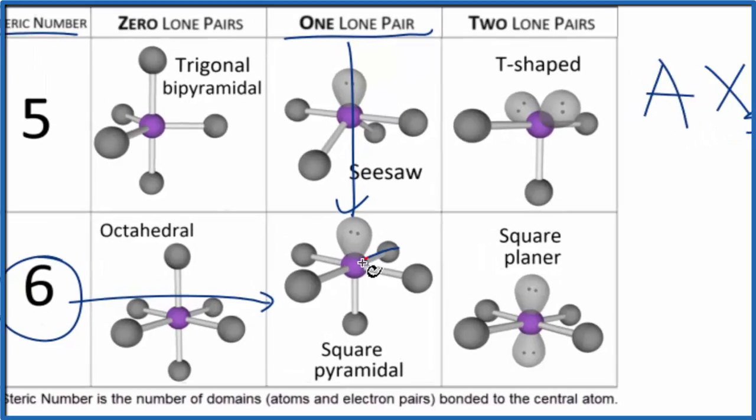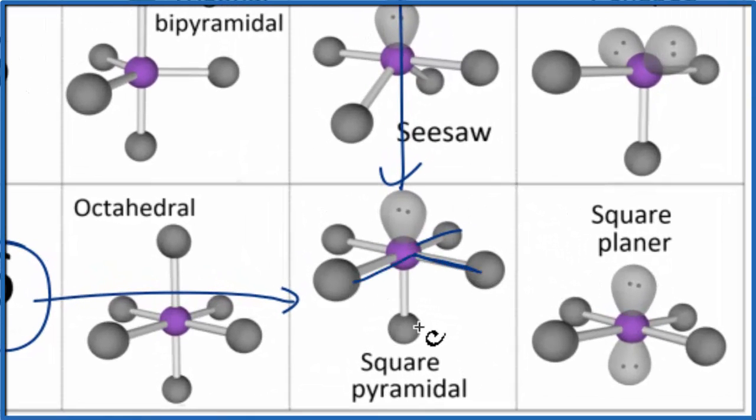We would expect these bond angles here to be 90 degrees, but the fluorine down here has a little bit of a different orientation, so that's going to be a little bit less. We look that up on Wikipedia here, this would be 81.9 degrees for the bond angle here.